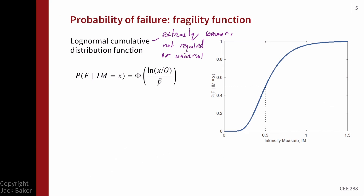Let's walk through this equation. We write P_f where f denotes failure — that binary outcome discussed previously. It could be a collapse, occurrence of damage, or a building closure: something we can define as yes or no. It's conditioned on some intensity measure level, specifying the amplitude of ground motion in terms of peak ground acceleration or spectral acceleration. The capital Φ on the right-hand side denotes the standard normal cumulative distribution function (CDF).